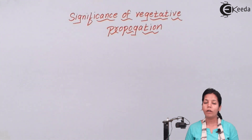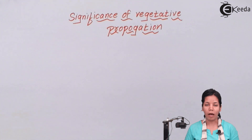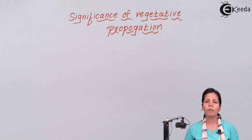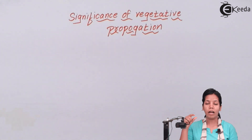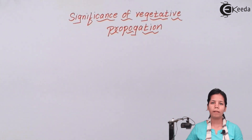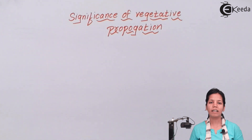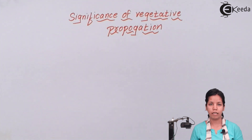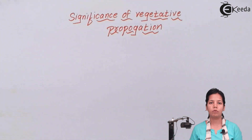Whenever you grow potato, turmeric, bryophyllum, radish, or carrot, all these processes are a part of vegetative propagation where you cut a part of the plant and grow a whole plant. During all this process, the advantage is that you don't have to depend on seeds, and even the adventitious bud or axillary bud will work for this.